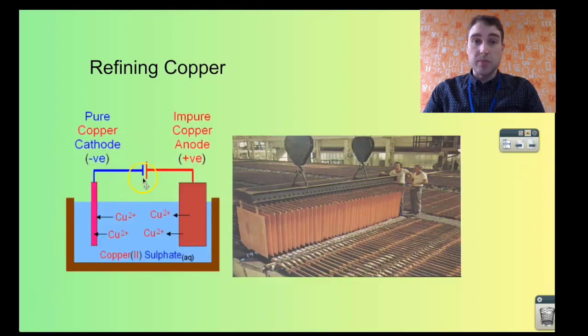Here's a picture of what would happen. Here you have your impure copper blister copper anode. It's not very pure. That's being oxidized to your copper ions in the solution.